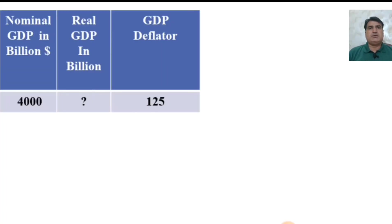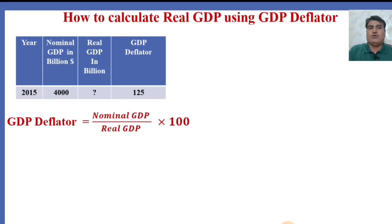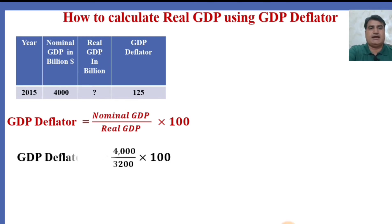Suppose the nominal GDP for the year 2015 was $4000 billion. The GDP Deflator is given as $125. Now we are going to calculate the real GDP in billions, which is missing. As we know, GDP Deflator is the ratio of nominal GDP to real GDP multiplied by 100.